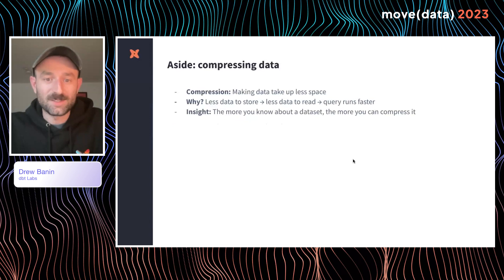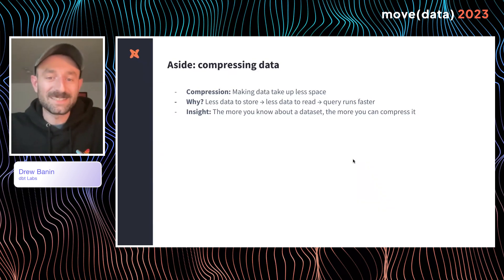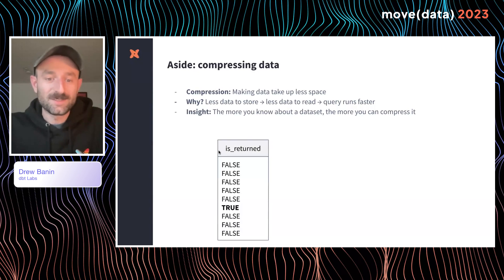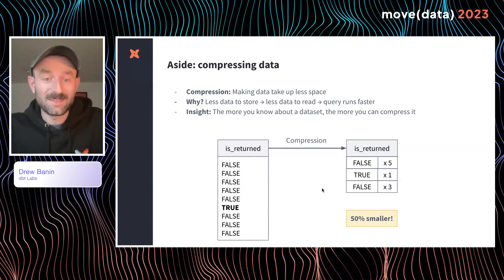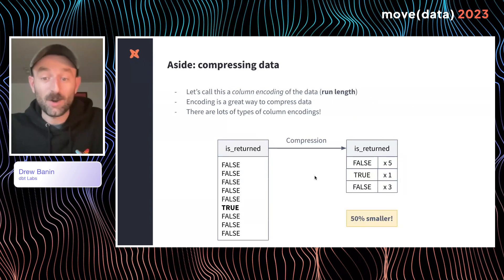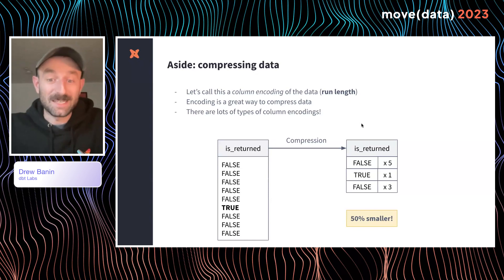The second thing we can do is compress our data. The goal of compression is to make data take up less space — the less data you store, the less you have to read, and the faster your query runs. The big insight is that the more you know about a data set, the more you can compress it. Take a column like is_returned, where only 5% of orders are returned. Instead of storing false, false, false, false, false, true, we can store false×5, true×1, false×3. The end result is we're storing about 50% of the data compared to the raw format. This is called run-length encoding, because we store a run of false values of length five — a great way to shrink data and speed up queries.